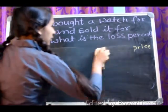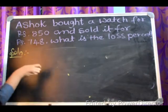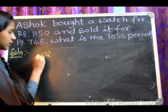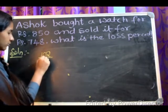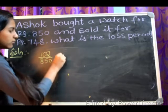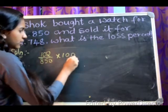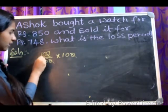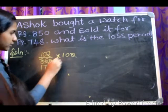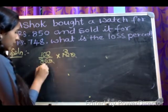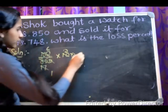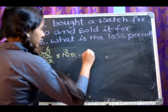Now we have to find the loss percent. To find the loss percent, we put loss — that is 102 — divided by cost price, that is 850, multiplied by 100. Simplifying the calculation, we get 12.